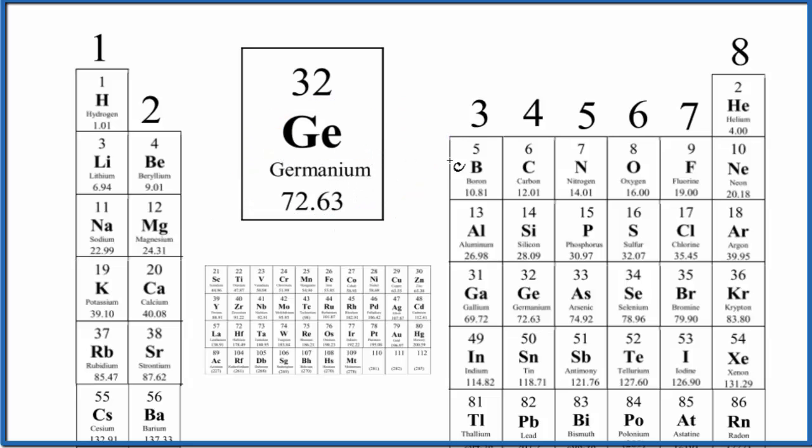So the periodic table is organized so that we can find the valence electrons fairly easily. Group 1, all of these have one valence electron. Group 2, they have two valence electrons. The transition metals, we skip those, they're a bit complicated.